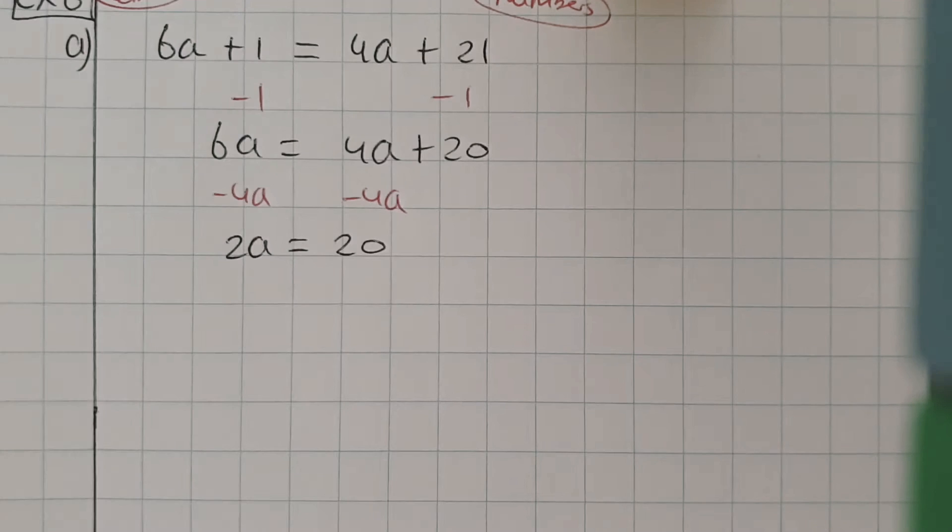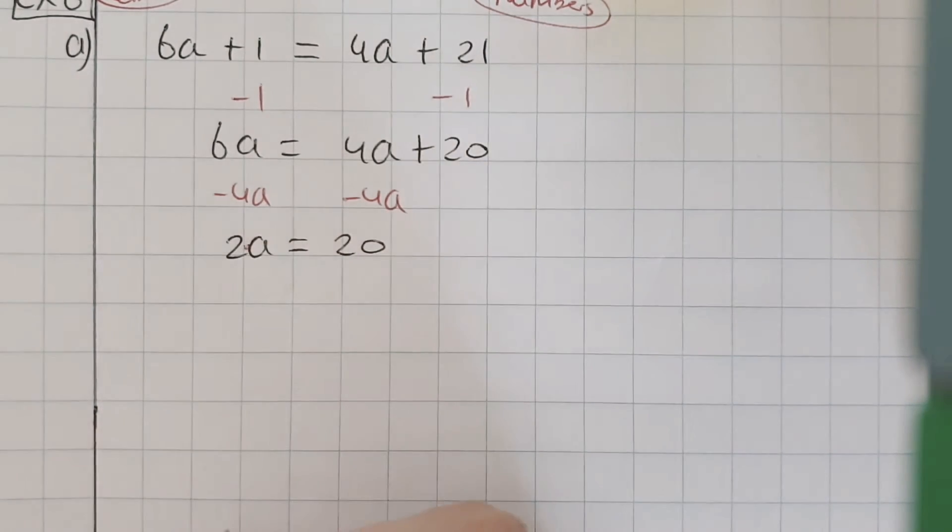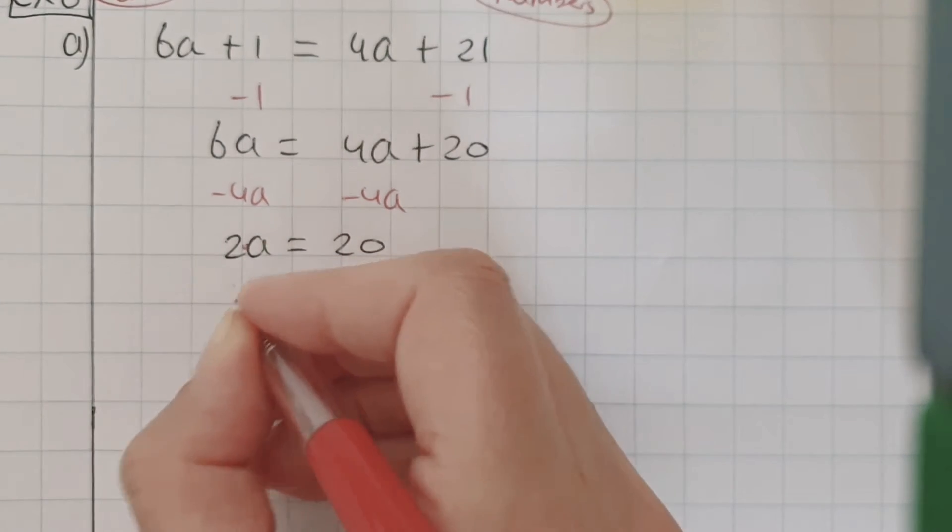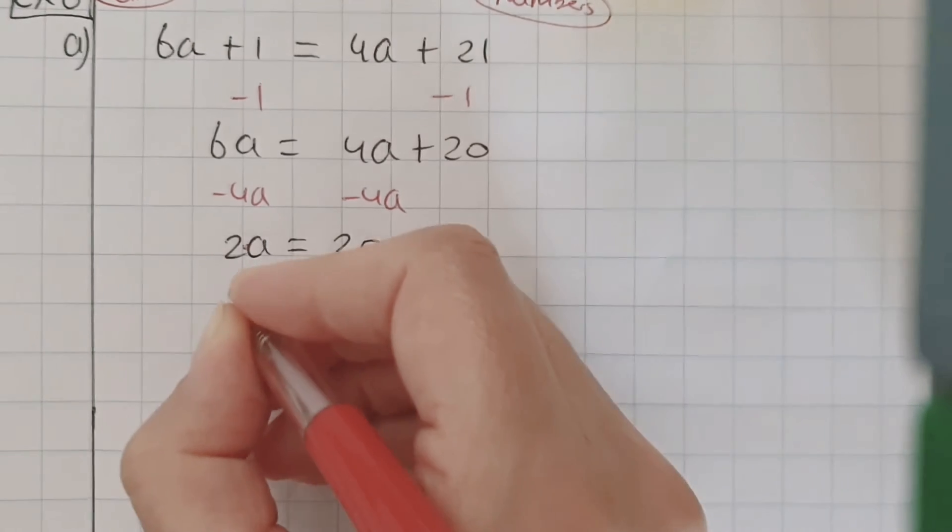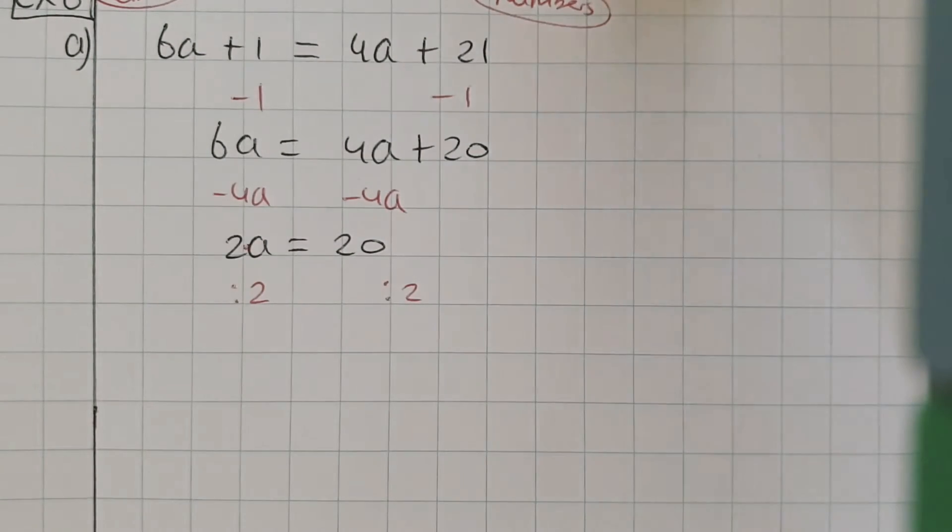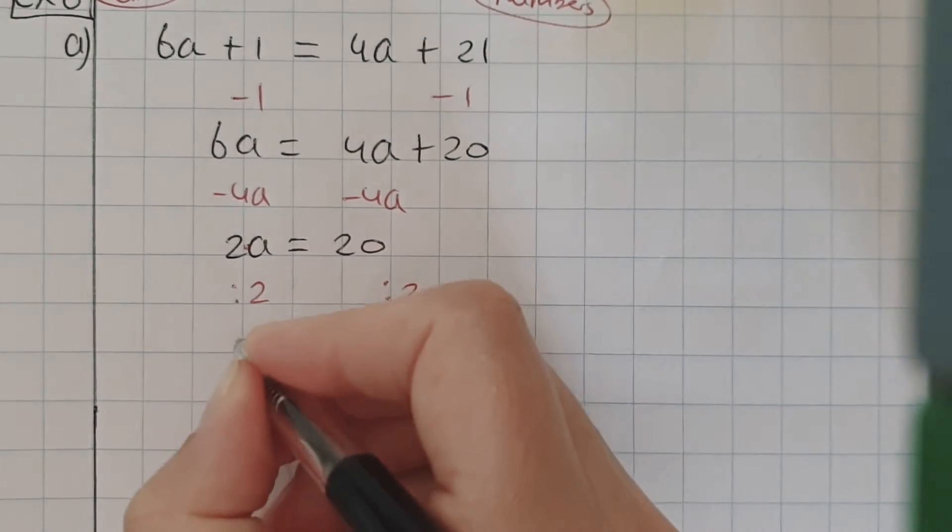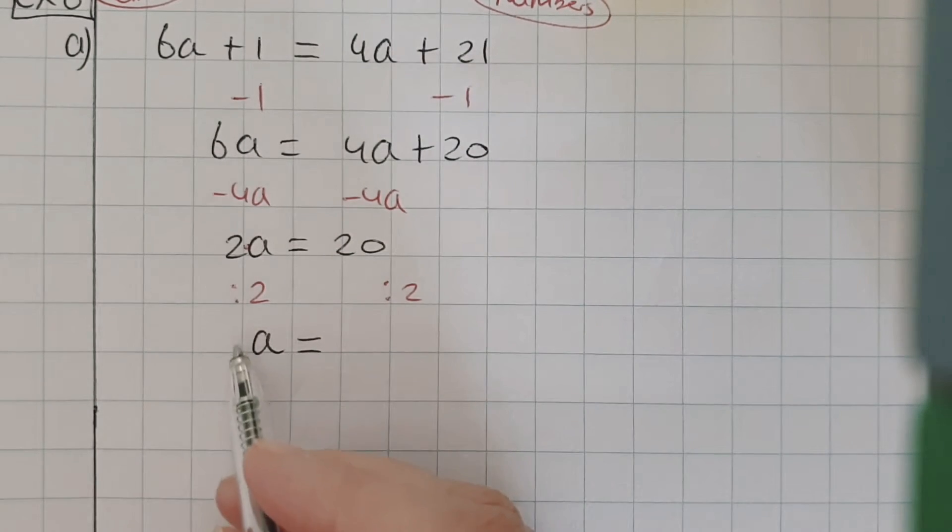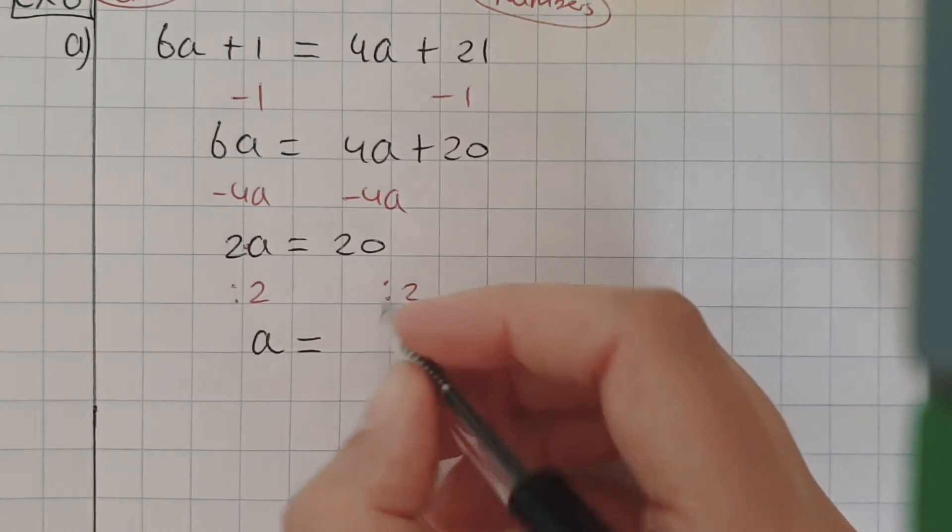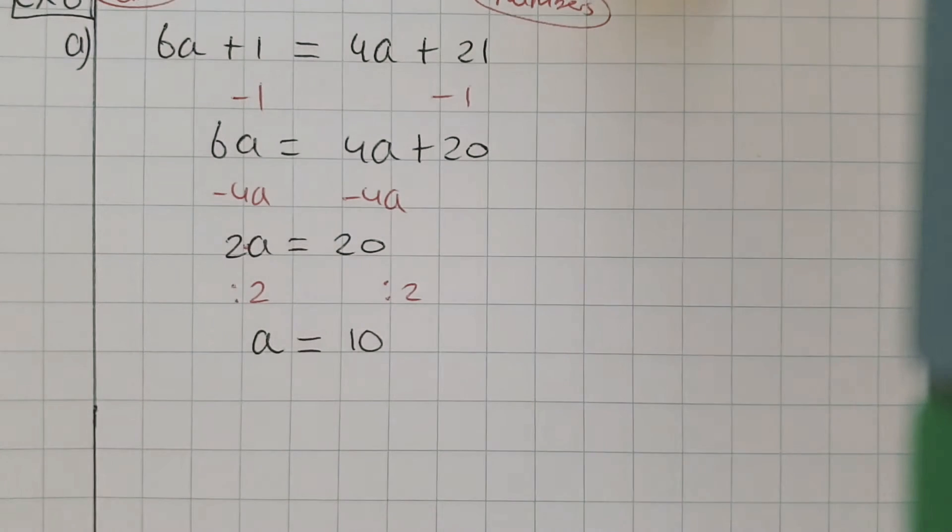Then I need to take away the 2. There's a times in between, so we're going to do the opposite of times, which is divided by 2 on this side, divided by 2 on this side. 2 divided by 2 is 1, so it's 1a. You don't have to write down the 1. 20 divided by 2 is 10. The solution to this equation is a is 10.